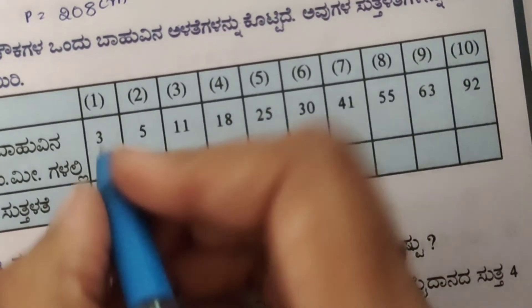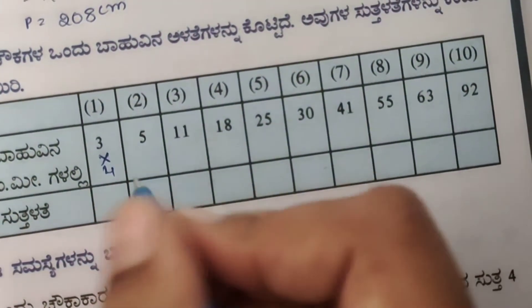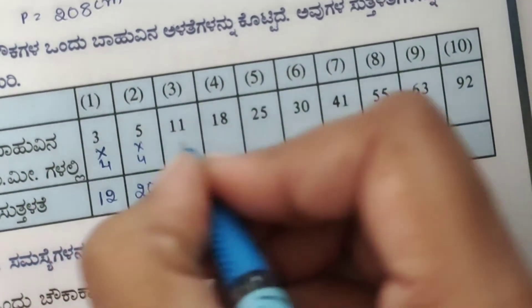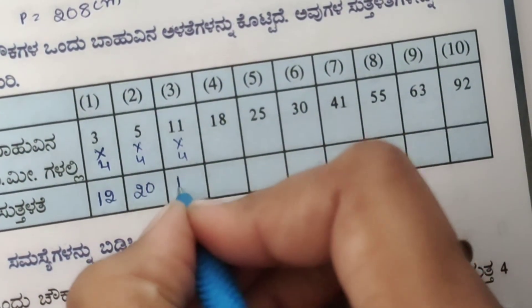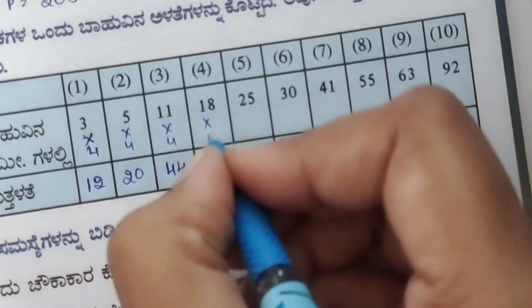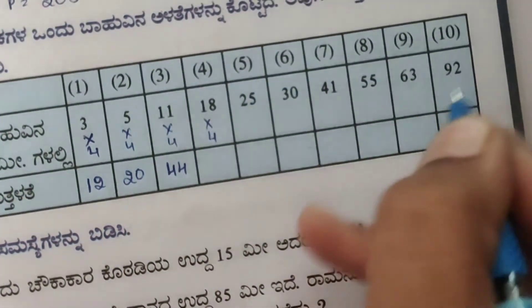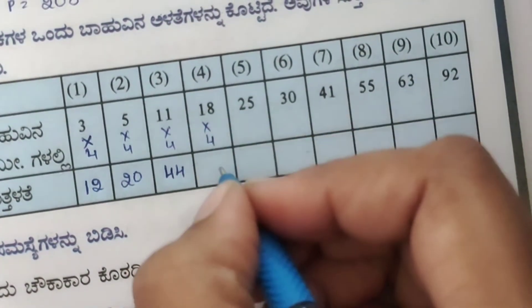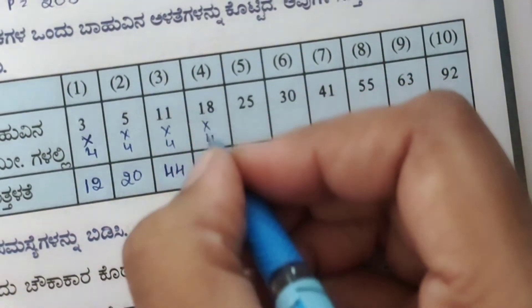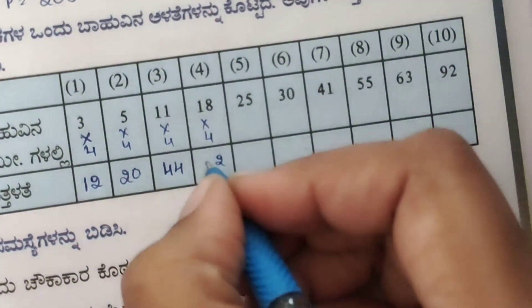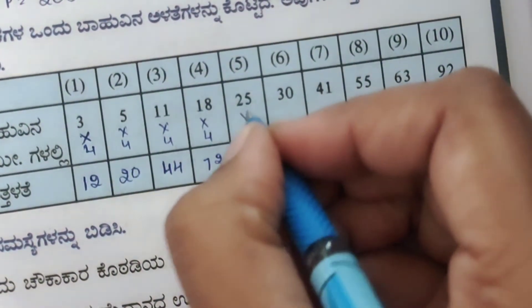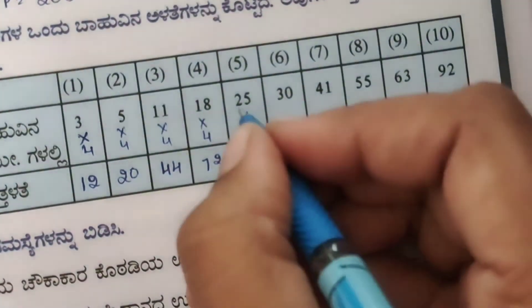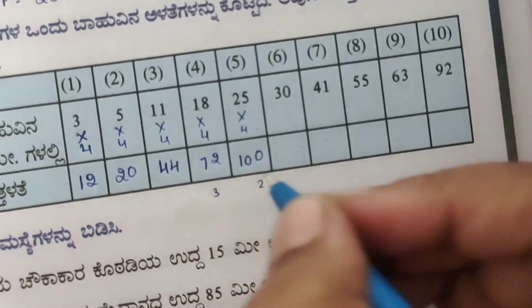Perimeter is equal to 4 into L, that is 4 into 35. 4 fives are 20, carry 2, 4 threes are 12 plus 2 is 14, so the perimeter is 140 centimeters.